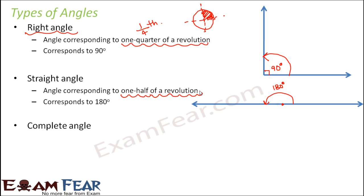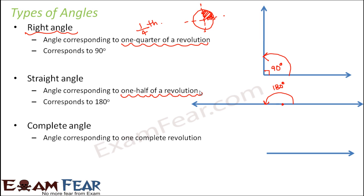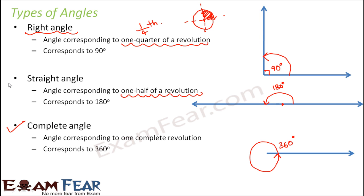Finally, we have complete angle — meaning one complete revolution. So one complete revolution corresponds to how many degrees? It corresponds to 360 degrees. That means you start from here and come back to the same position — that is 360 degrees, and this is called a complete angle. Complete means you completed one revolution, so it is a complete angle of 360 degrees.